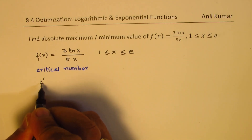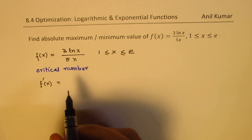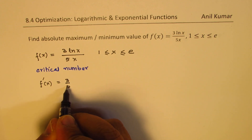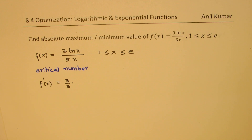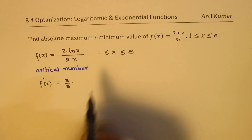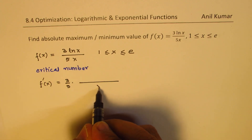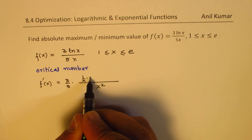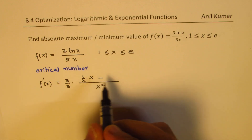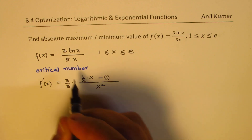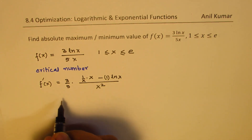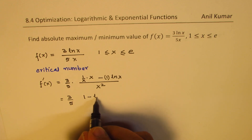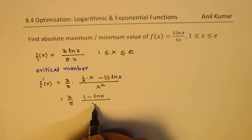The derivative of the function is: the constant 3/5 can be kept outside. Then applying the quotient rule, we get 3/5 times [x·(1/x) − ln(x)] / x², which simplifies to 3/5 times (1 − ln(x)) / x².